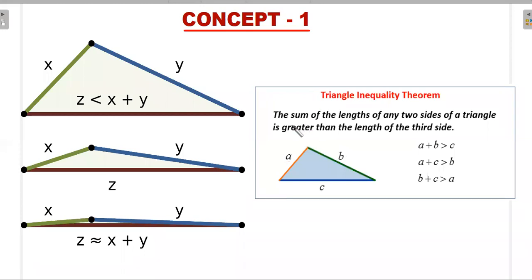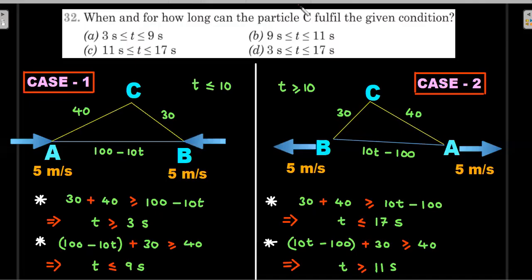We'll start with a simple geometry concept from childhood: in any triangle of sides a, b, and c, the sum of any two sides must always be greater than the third. Equality occurs only when the three points are collinear. When three points are not collinear, they always form a plane and you can draw a triangle — this is what we'll use in this situation.